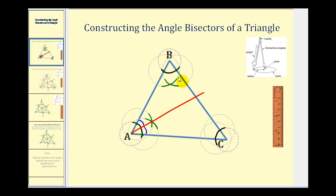The angle bisector will pass through this point of intersection and vertex B. Again, we know that these two smaller angles are congruent and half the measure of angle B.